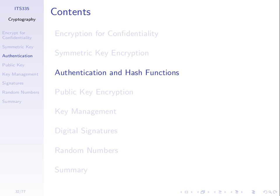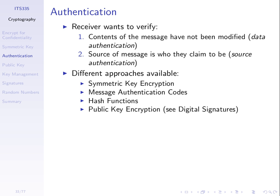We're talking about how to verify that a message we received hasn't been modified and comes from the right sender — so authentication. There are different approaches for authentication. The receiver wants to make sure that nothing has changed and that the sender is who they claim to be. We saw last week towards the end of the lecture that we can use symmetric key encryption to provide authentication.